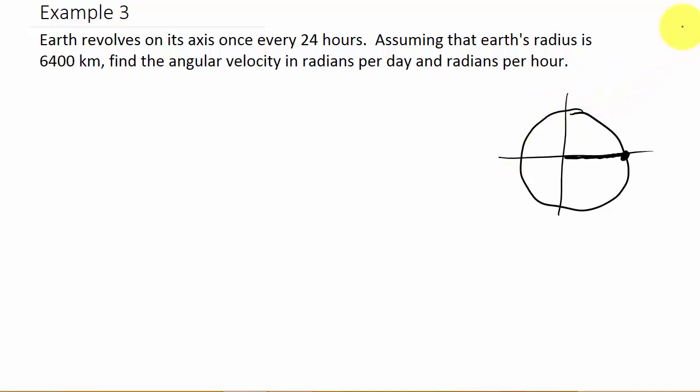It revolves on its axis once every 24 hours. So let's write down our formula. Angular velocity is alpha over t. So I need the angle it makes in a given time. It revolves on its axis once every 24 hours.